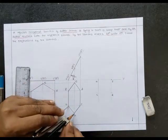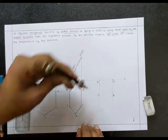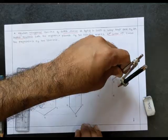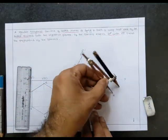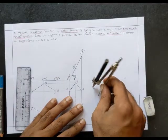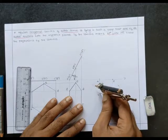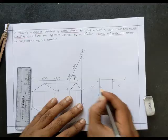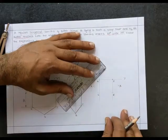Measure corner AB: take F as center and draw an arc, then D as center and bisect; similarly C as center draw an arc, A as center and bisect. You get corner B as well as corner E. Now darken the object.